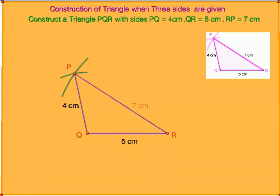Now triangle PQR is the required triangle with the given measurements. PQ is equal to 4 cm, QR equals to 5 cm and RP is equal to 7 cm. This way we can construct the triangle. Thank you.